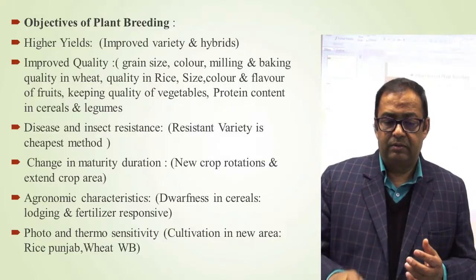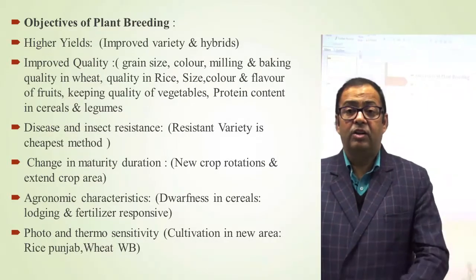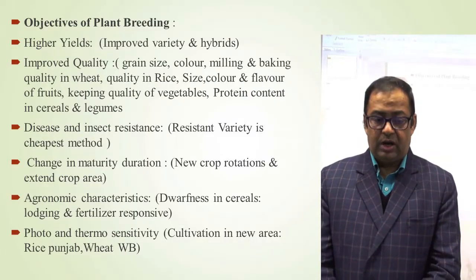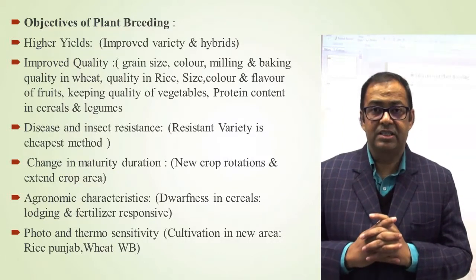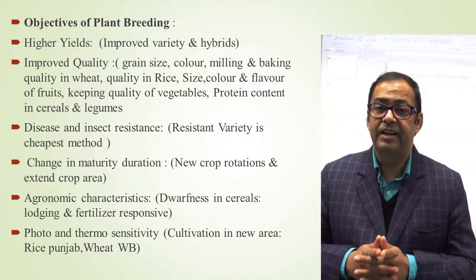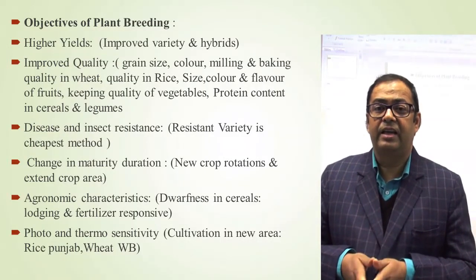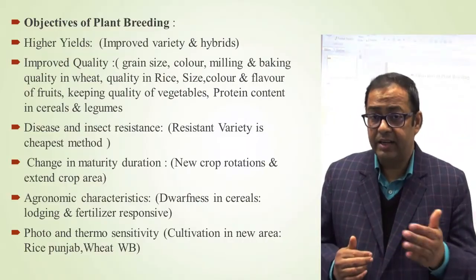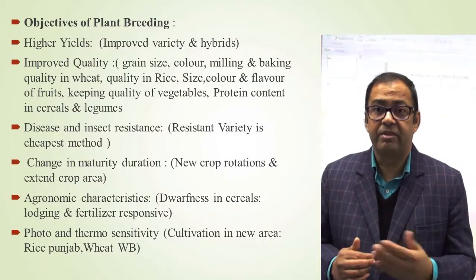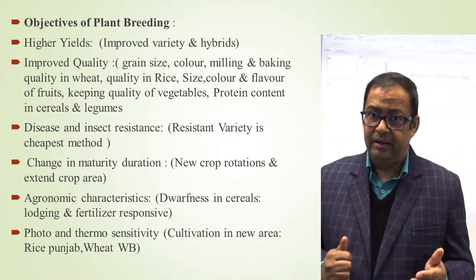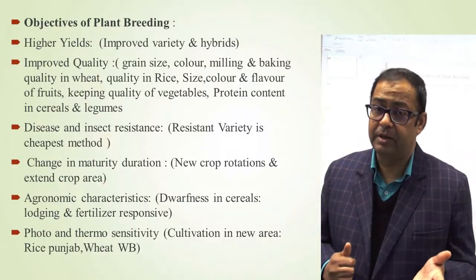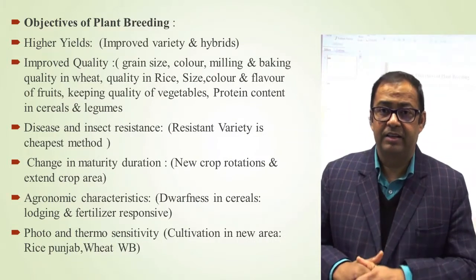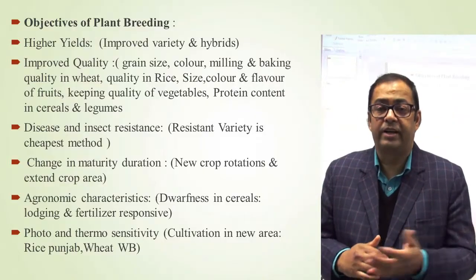In plant breeding, as I said earlier, we improve the characteristics so that our plants become economically superior. So many activities are there. The first objective of a plant breeder is to get high yield — by developing high yielding varieties, superior varieties, even hybrid varieties, and by farmers adopting high yielding varieties, we can get high yield. Yield is the utmost priority.